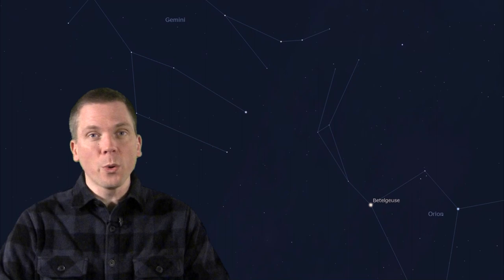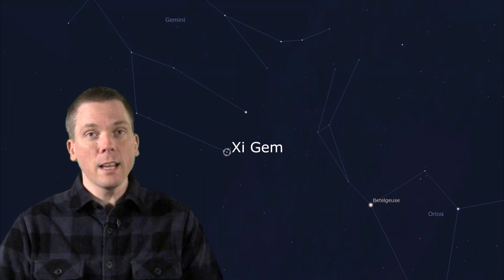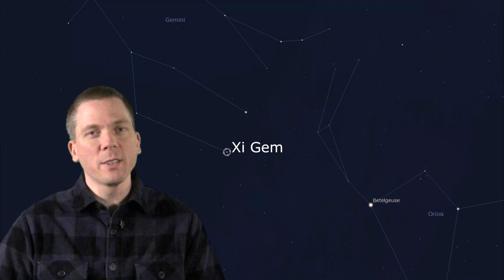Now let's start from Gemini, more towards overhead. Hopping across the 2nd through 4th magnitude feet of the twins, turn as if you're heading back to Beta Monocerotis after passing Xi Geminorum. Just half a finderscope field of view away, but returning into Monocerotis is 4.7 magnitude 15 Monocerotis, easily seen with binoculars.